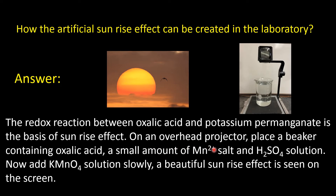On an overhead projector, place a beaker containing oxalic acid, a small amount of manganese salt, and sulfuric acid solution. Now add potassium permanganate solution slowly, and a beautiful sunrise effect is seen on the screen. You can practice it in your chemistry lab.